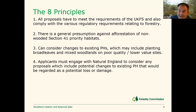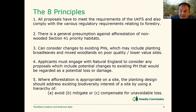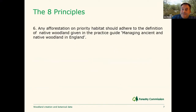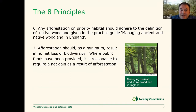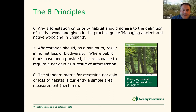Critically, applicants must engage with Natural England to consider any proposals which include potential changes to existing priority habitat that would be regarded as a potential loss or damage. Where afforestation is appropriate, the planting design should address the existing biodiversity interest of the site and use the hierarchy of avoid, mitigate, or compensate for any unavoidable loss. Any afforestation on the priority habitat should adhere to the definition of native woodland given in the practice guide Managing Ancient and Native Woodland in England, released in 2010. Afforestation should as a minimum result in no net loss of biodiversity, and where public funds have been provided, it's reasonable to require a net gain.